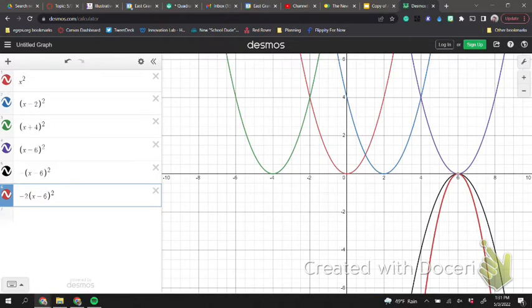That coefficient of our quadratic term, which that's what this will change. The larger absolute value, the more narrow, the smaller the absolute value, the more wide, and then the negative makes it go down instead of up. So let's focus then. I'm going to get rid of these.